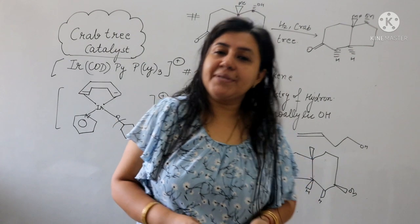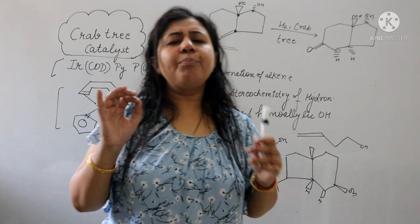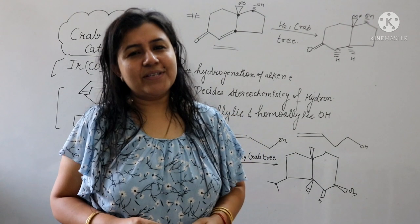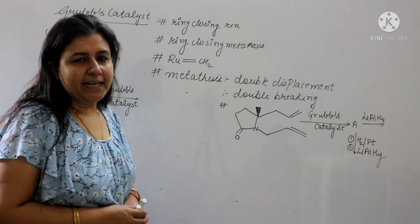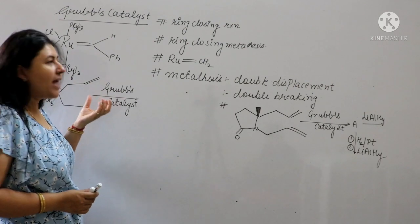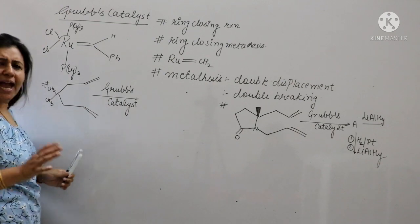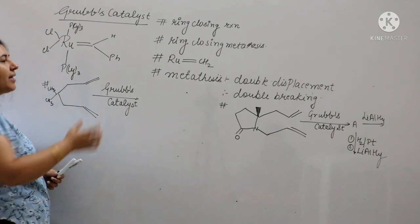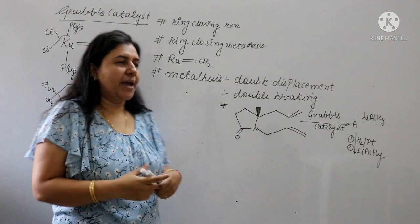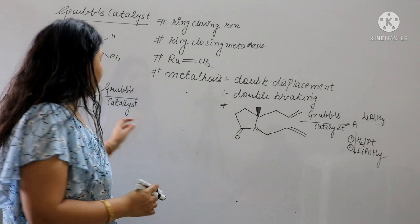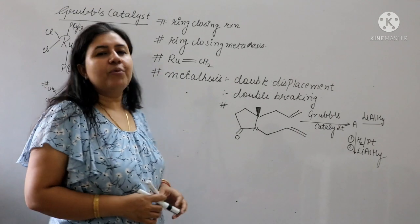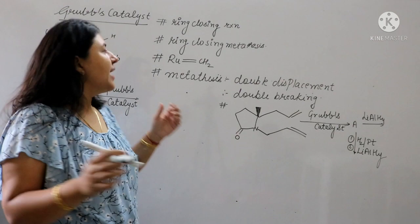Now we will do the main Grubbs catalyst. I will share a beautiful trick with you so everything will be easy. Let's start with Grubbs catalyst. This is the structure — there is ruthenium, phosphorus cyclohexyl, chlorine, and a carbene (=CHPh) ligand. Grubbs catalyst has no big complex structure to draw. Its work is ring-closing metathesis — as you can see here, you can do a simple ring closing. It's called ring-closing metathesis.